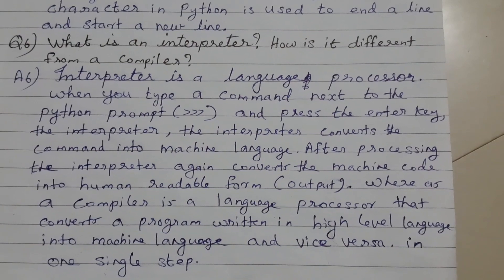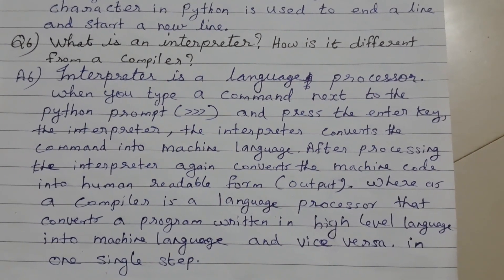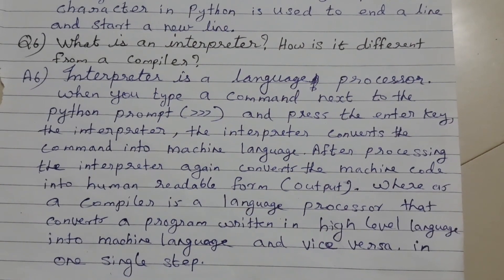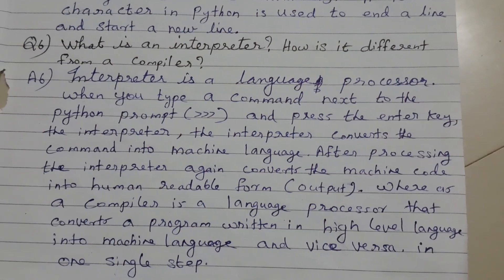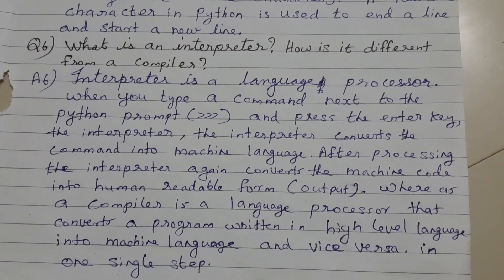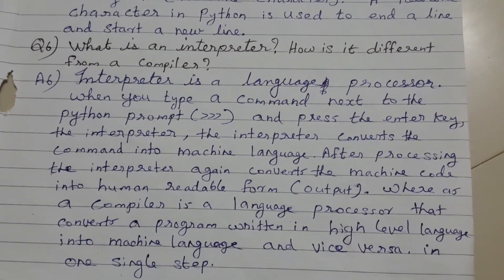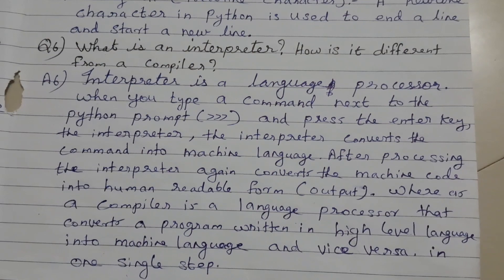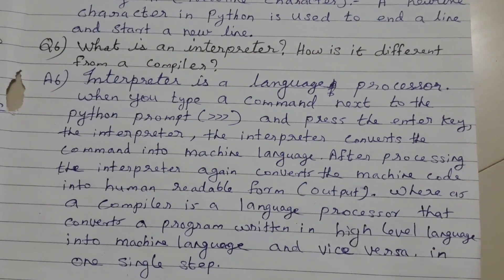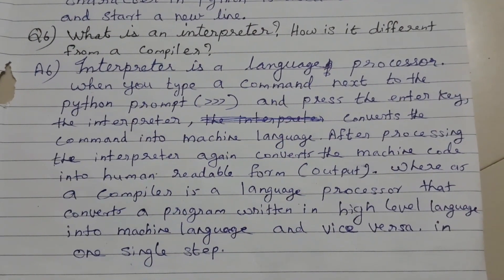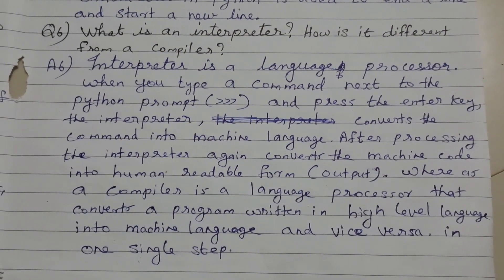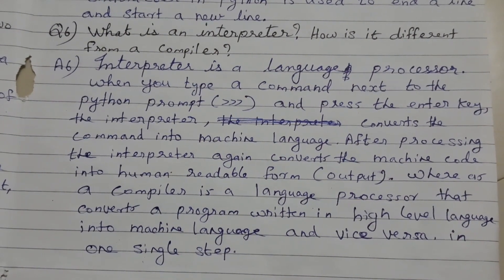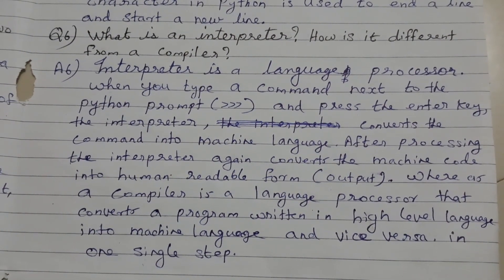What is an interpreter? How is it different from a compiler? An interpreter is a language processor. When you type a command next to the Python prompt and press the Enter key, the interpreter converts the command into machine language. After processing, the interpreter converts the machine code back into human-readable form as output. Whereas a compiler is a language processor that converts a program written in high-level language into machine language in one single step.